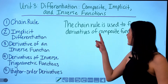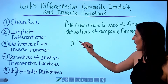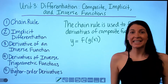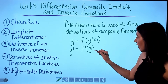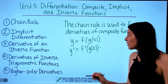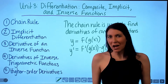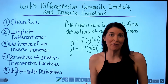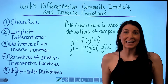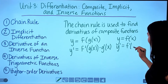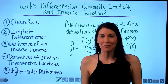First is the chain rule, and the chain rule is used to find derivatives of composite functions. For example, if y equals f of g of x, to find the derivative of y you take f prime of g of x and multiply by the derivative of the inside function, g prime of x. A helpful tip: think of every derivative problem as a chain rule problem. Even if y is simply f of x, take y prime as f prime of x times the derivative of the inside, which is just times 1.